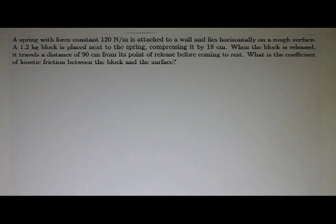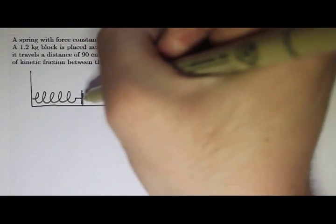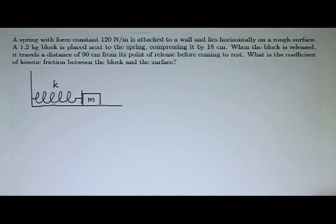So before we solve this, we should probably draw a picture of what's going on. So we have the wall, here's the wall, and then here's the surface, and then here's our spring attached to the wall. And then it says that a block is pushed up against the spring. So there's our block of mass m, and then our spring constant can be k.